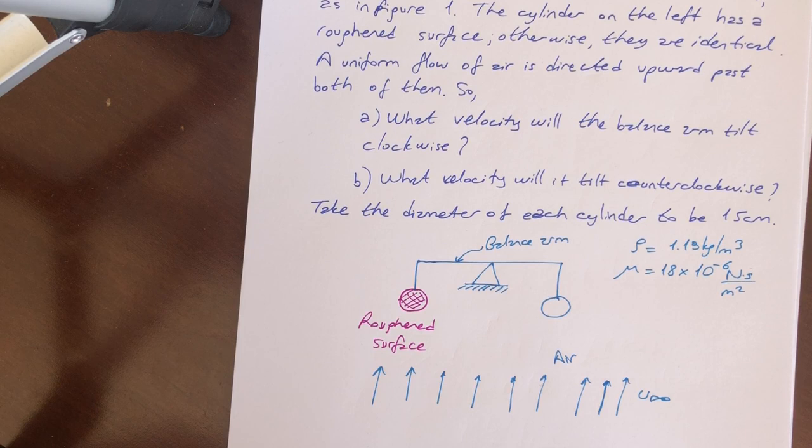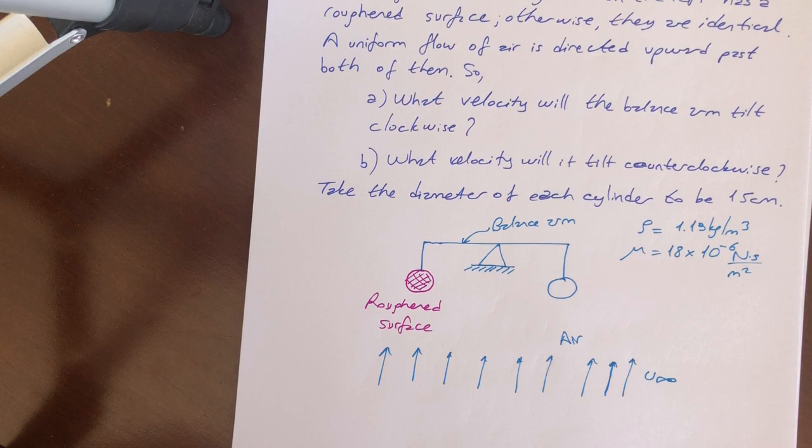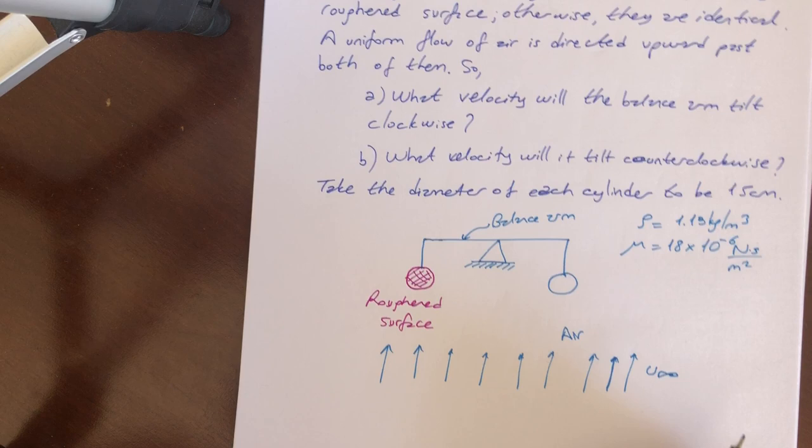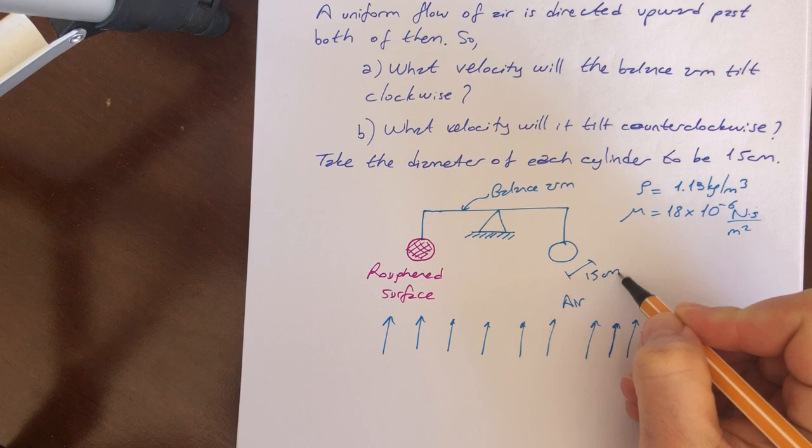What velocity will the balance arm tilt clockwise? The question B is: what velocity will it tilt counterclockwise? We can choose the diameter of each cylinder as 15 centimeter.